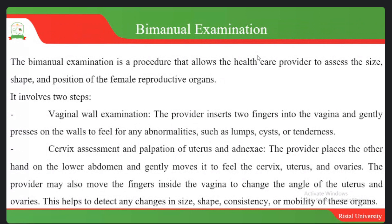The bimanual examination is a procedure that allows the healthcare provider to assess the size, shape, and position of the female reproductive organs. It involves two steps. First, vaginal examination: the provider inserts two fingers into the vagina and gently presses on the walls to feel for abnormalities such as lumps, cysts, or tenderness along the vaginal walls.